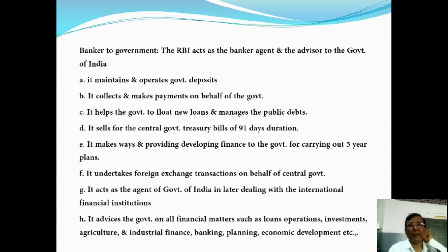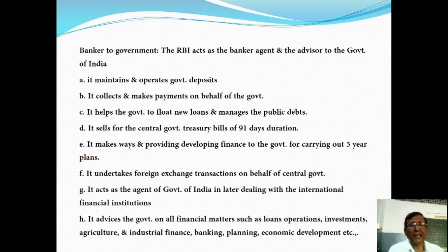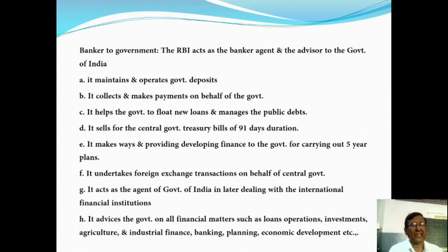The second function is Banker to Government. The RBI acts as the banker, agent and advisor to the Government of India. It maintains and operates government deposits. It collects and makes payments on behalf of the Government. It helps the Government to float new loans and manages the public debts. It sells central Government Treasury bills of 91 days duration. It makes ways and means advances and development finance to the Government for carrying out 5-year plans. It undertakes foreign exchange transactions on behalf of the Government and acts as the agent of the Government of India in dealings with international financial institutions.